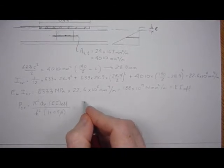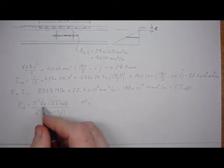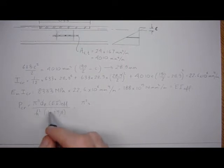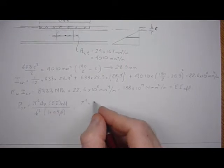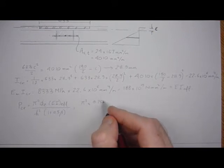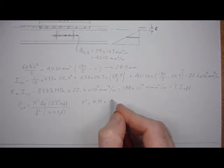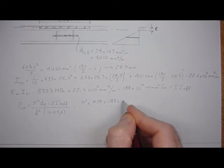Divided by the height squared times one plus 0.5 beta. So we got pi squared times Phi E is for reinforced masonry when we're doing the buckling load, we take Phi E is 0.75, it's not 0.6. The code says it's 0.75.